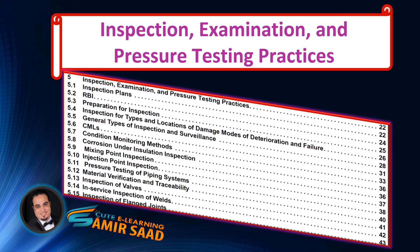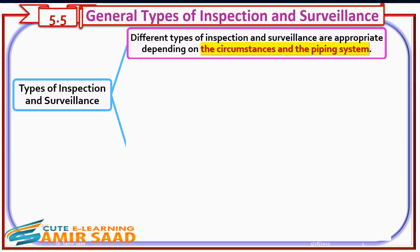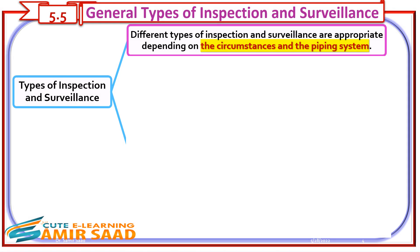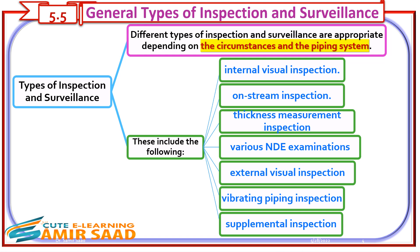In this lecture, we will continue discussing clause 5, highlighting important information in sub-clause 5.5: General Types of Inspection and Surveillance. Different types of inspection and surveillance are appropriate depending on the circumstances and the piping system. These include: Internal Visual Inspection, On-Stream Inspection, Thickness Measurement Inspection, Various NDE Examinations, External Visual Inspection, Vibrating Piping Inspection, and Supplemental Inspection.